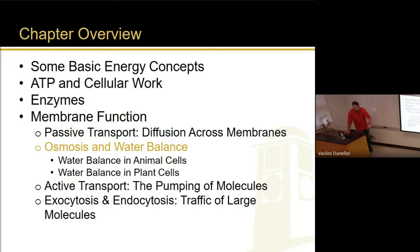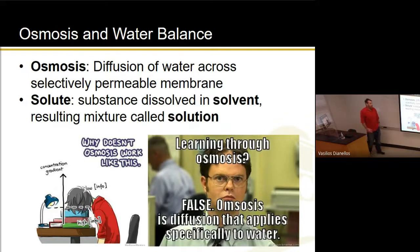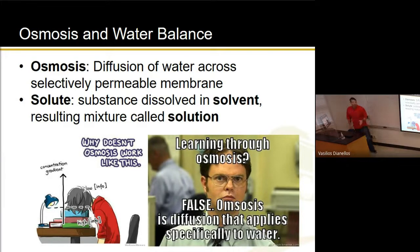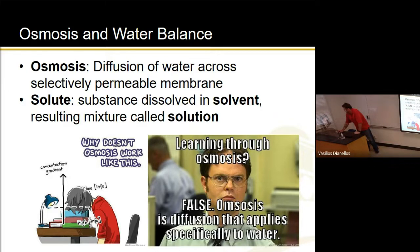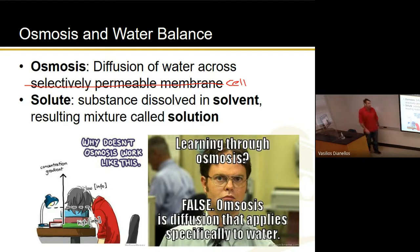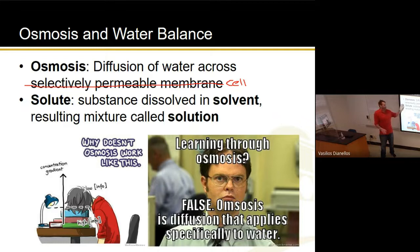Anyway, here we go. Osmosis again — here's the more complicated version. The osmosis definition is the diffusion of water across a selectively permeable membrane. That's how you need to know it before the exam. When we say selectively permeable membrane, really what we're talking about is the cell membrane. This is biology, so we're talking about living things, about cells. We are concerned about water crossing the cell membrane, which is a selectively permeable membrane.